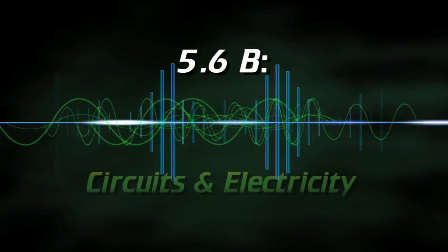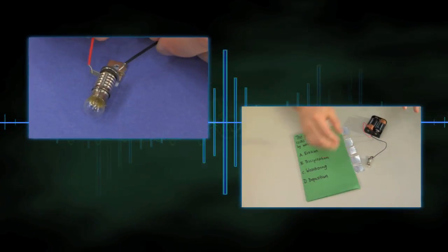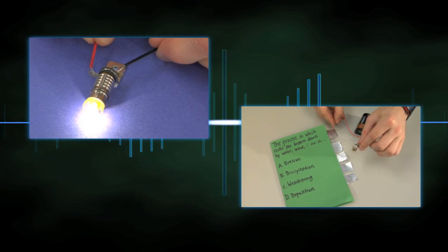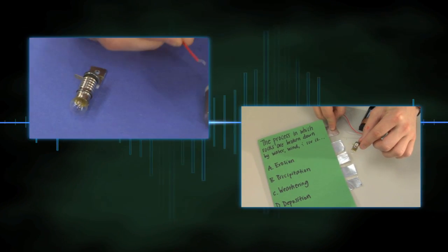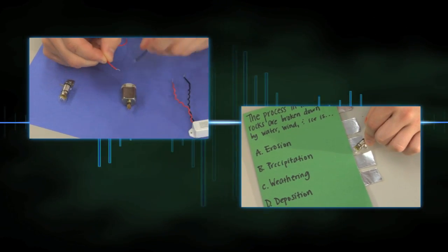5.6B Circuits and Electricity. In this activity, students build various circuits to demonstrate that the flow of electricity requires a complete path and can produce light, heat, and sound.